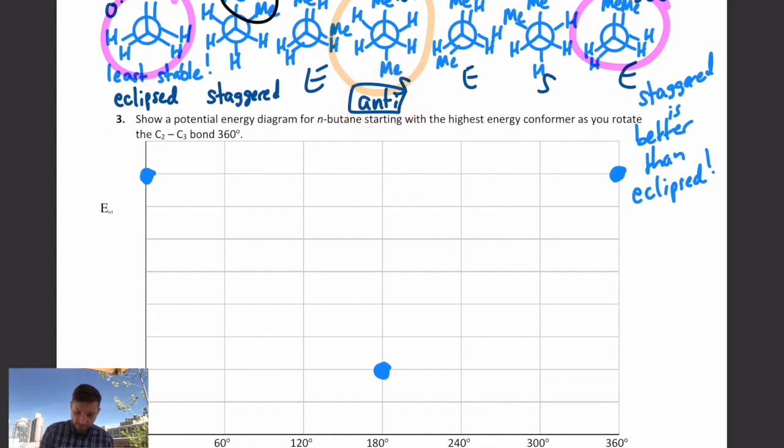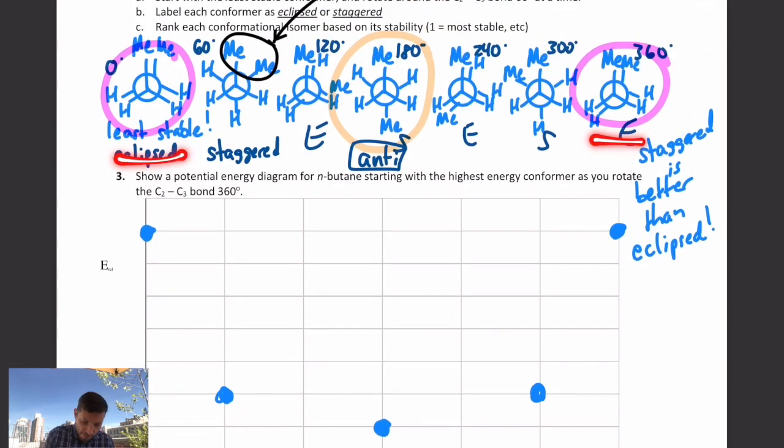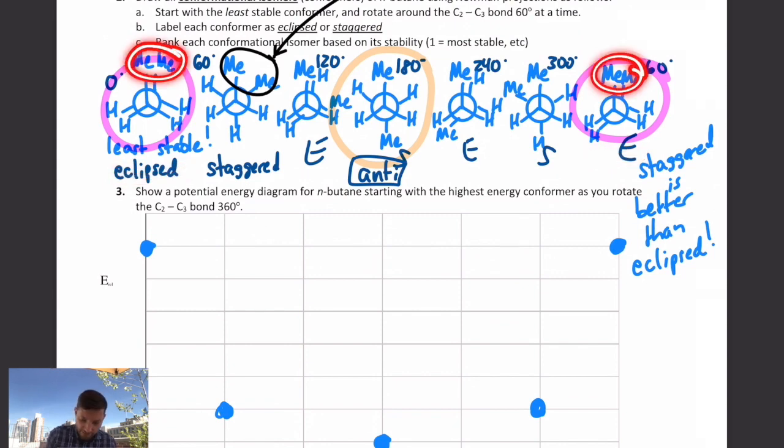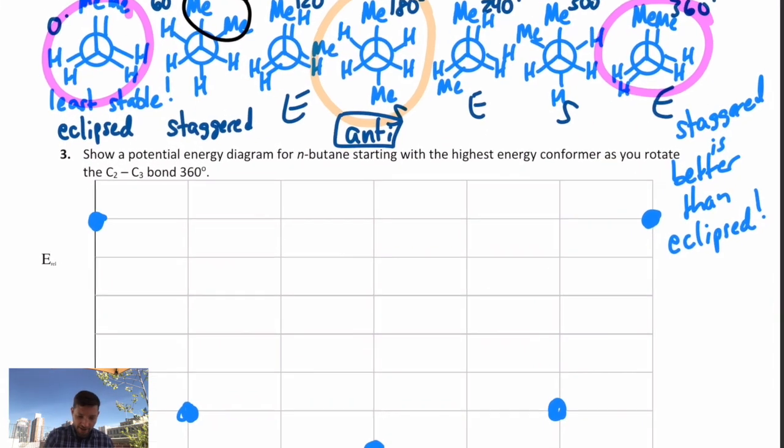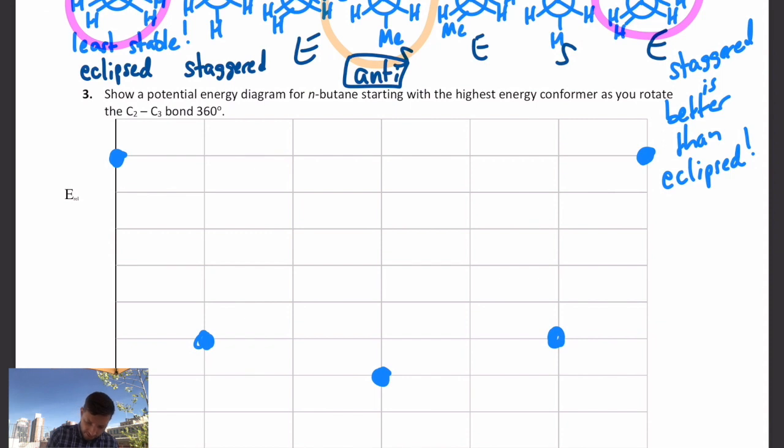It's still staggered, so it's still relatively low, but it's not as good as the 180, so I'll make it there, and then 300 is a tie. Now, the only two left are the 120 and the 240. Now, those are eclipsed, so they're going to be relatively high in energy, but not as high as our zero and our 360 because we don't have a methyl-methyl eclipsing interaction. We have methyl-hydrogen eclipsing interactions, which are much easier to handle than methyl-methyl eclipsing interactions. Remember, writing ME is an easy way to forget that that's a carbon with three hydrogens. That's a four-atom group as opposed to just one hydrogen atom. So these are high in energy, but not as high as our zero and 360, so I'll put them relatively up there.